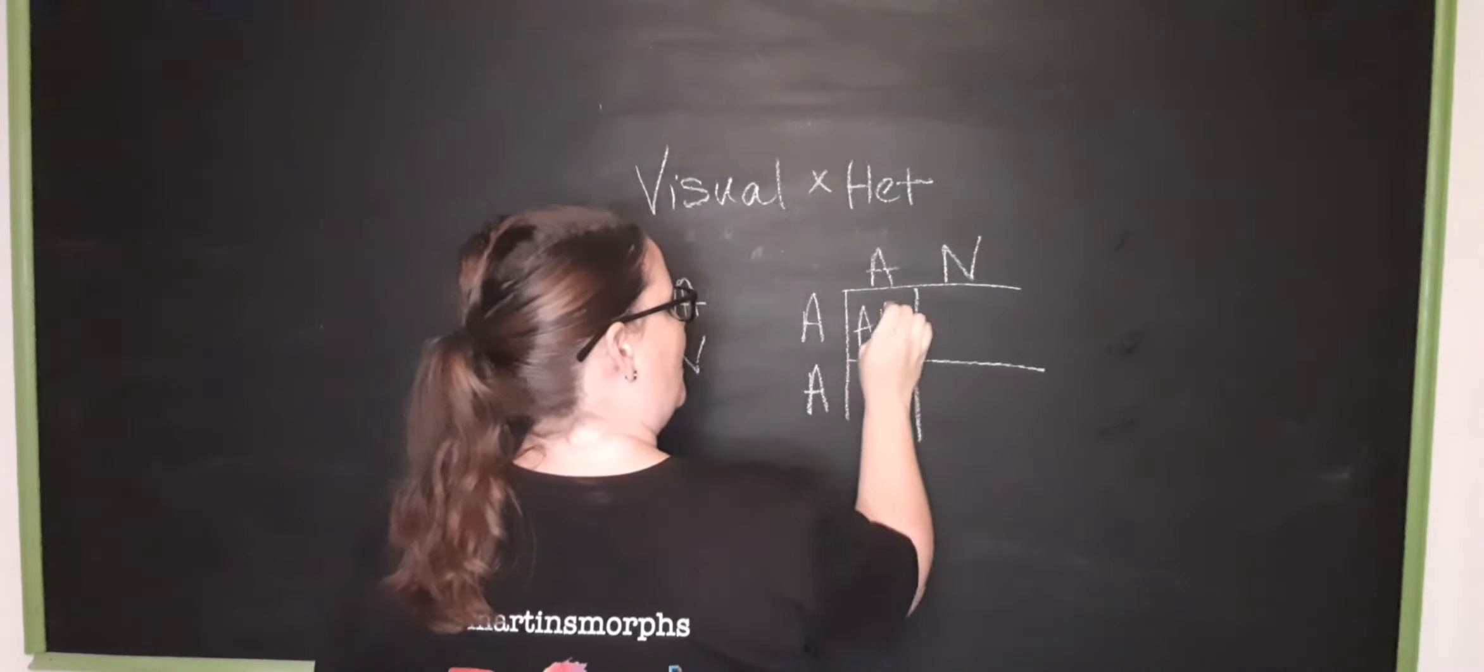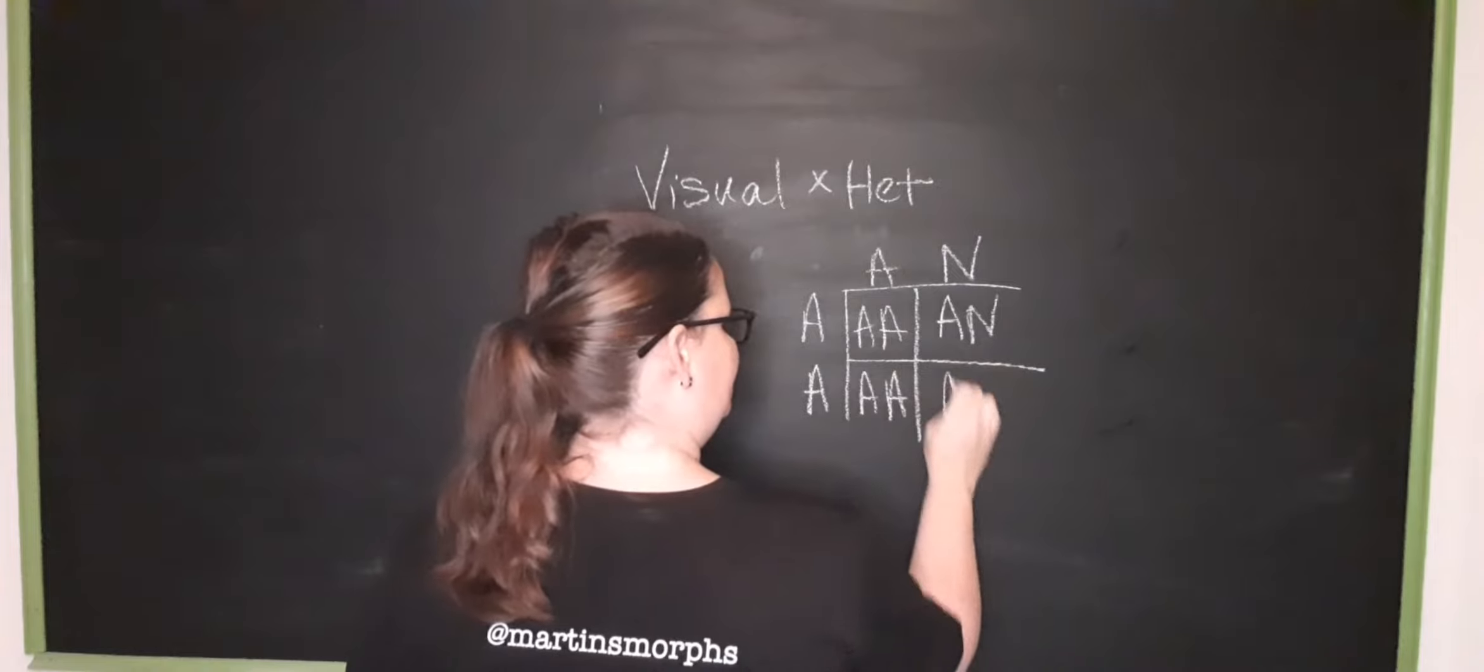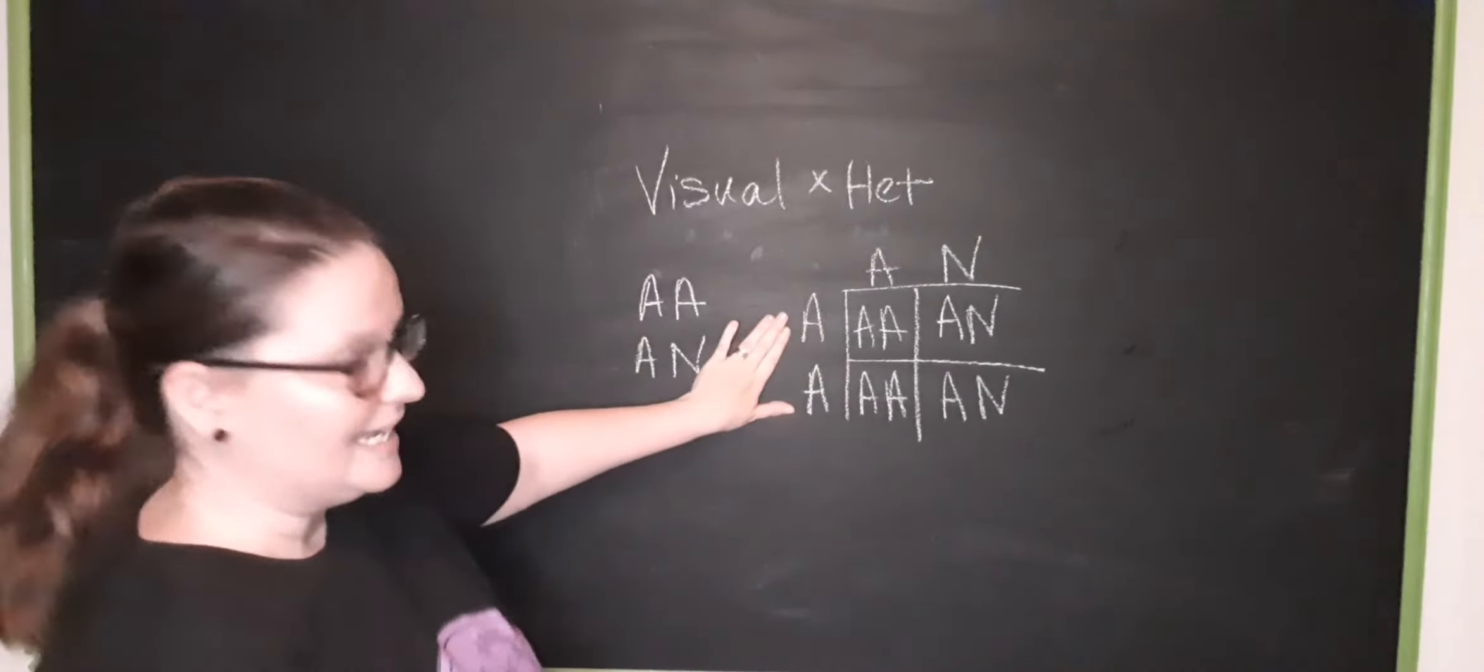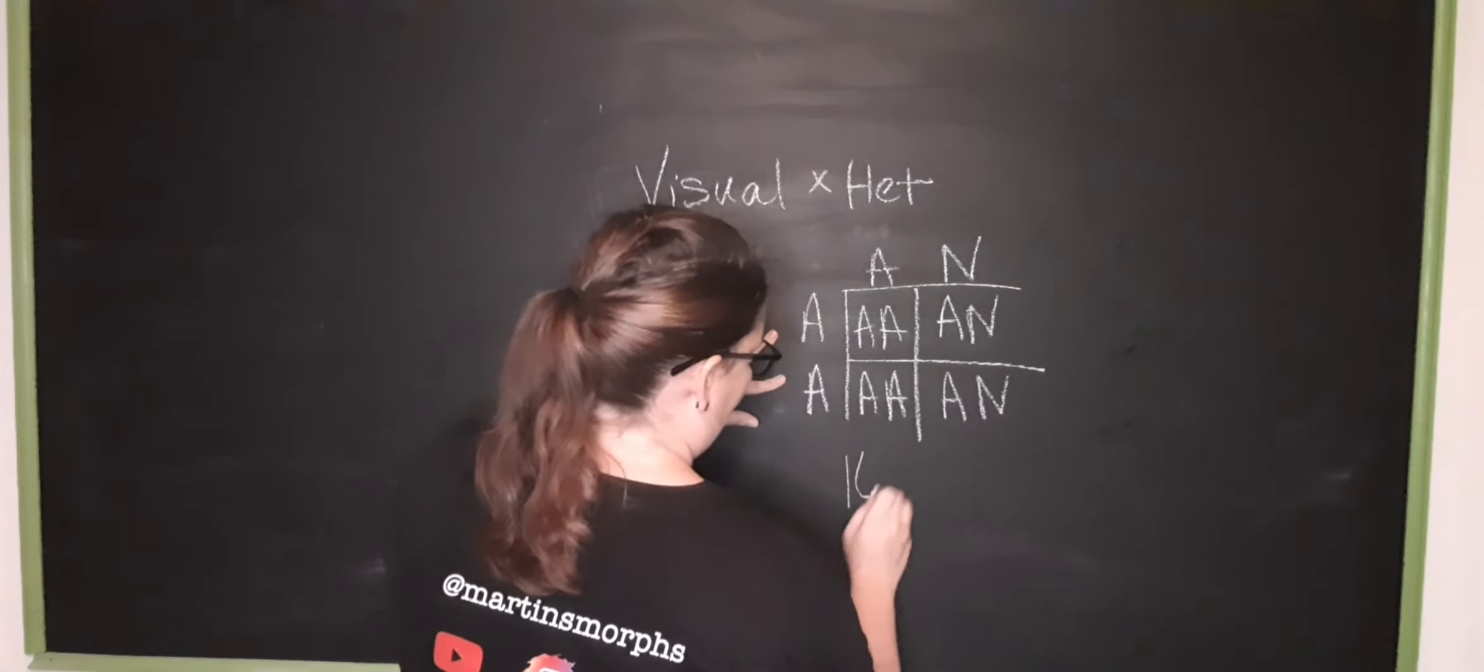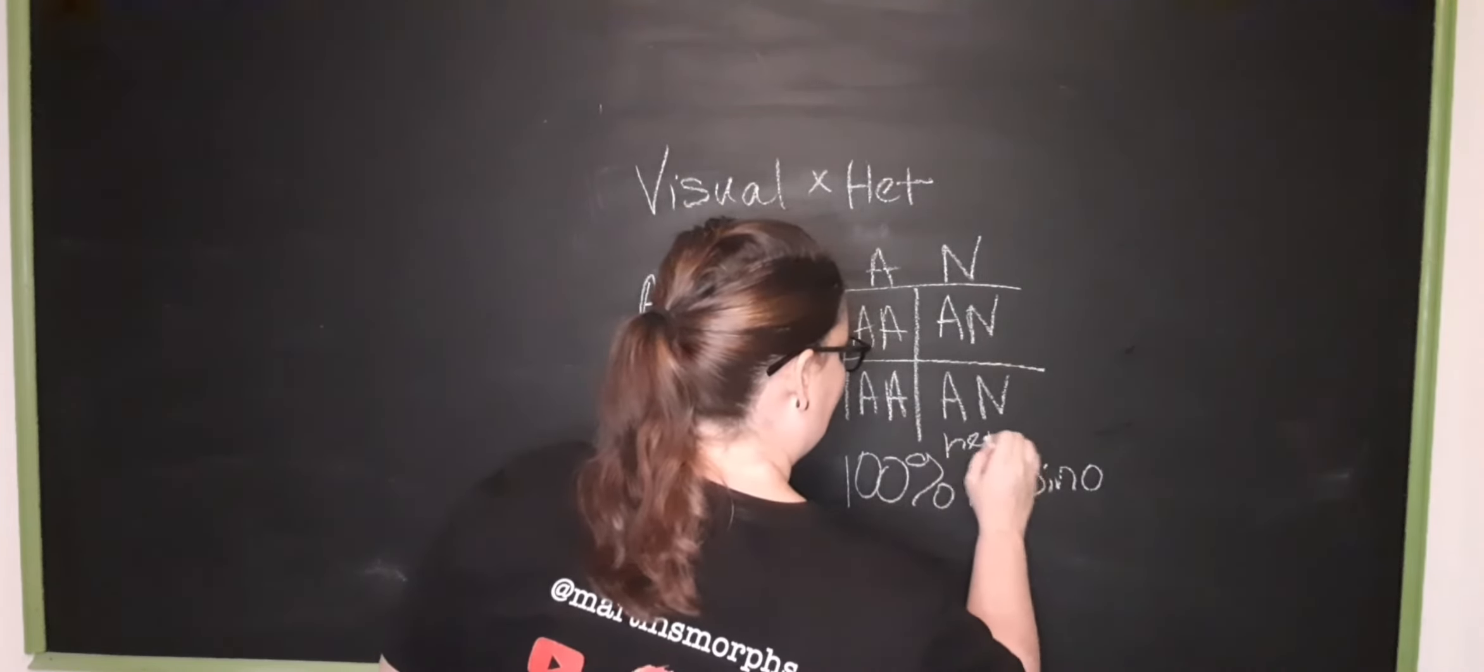You're going to have a visual albino. Then you're going to have a het, visual, and a het. So because this parent carries two copies of the albino gene, all of the babies are 100 percent het or albino.